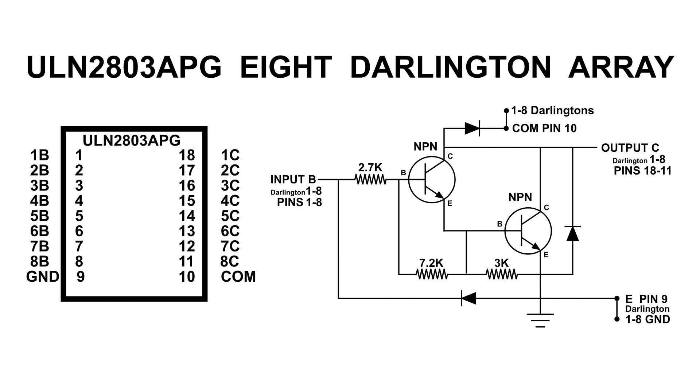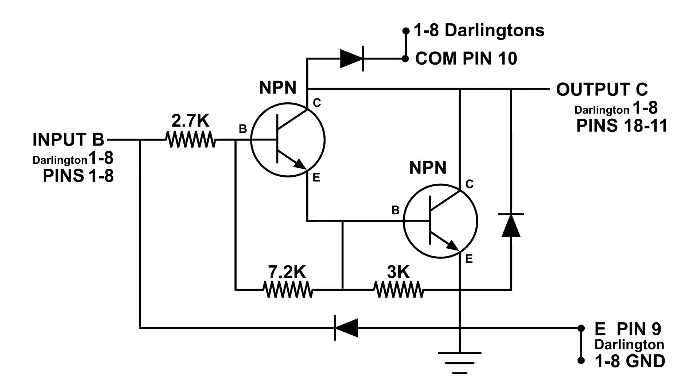Let's take a closer look at this Darlington circuit. If we take a look at the input, we're going to have eight different inputs for each Darlington, and each one has a 2.7k ohm resistor that goes to the base. This is very nice, because that means I can connect this directly to the output of another chip, which I have done, the 4017. Now, the other two resistors, the 7.2k and the 3k, they are for biasing, plus they also help increase the frequency response of the circuit.